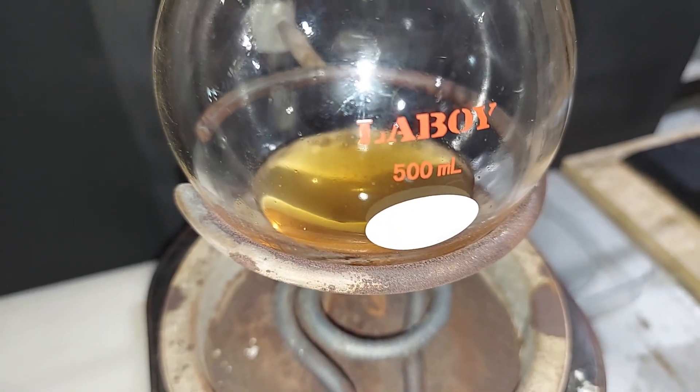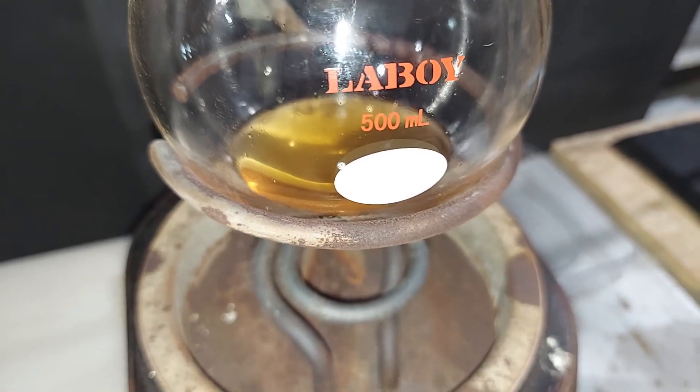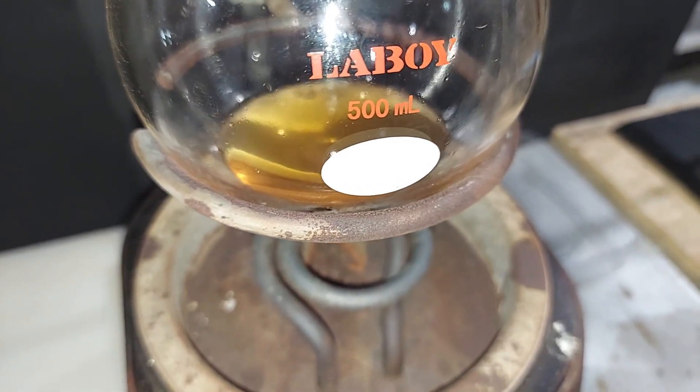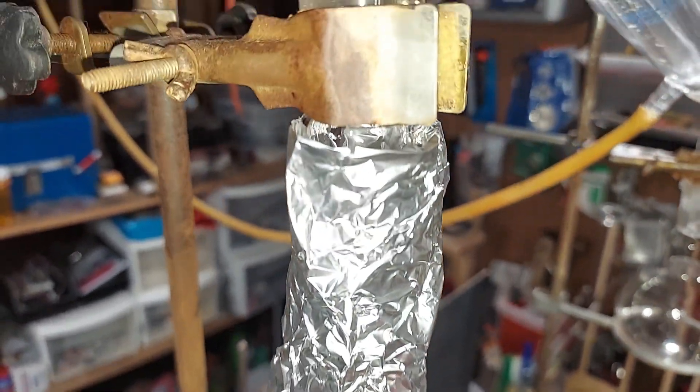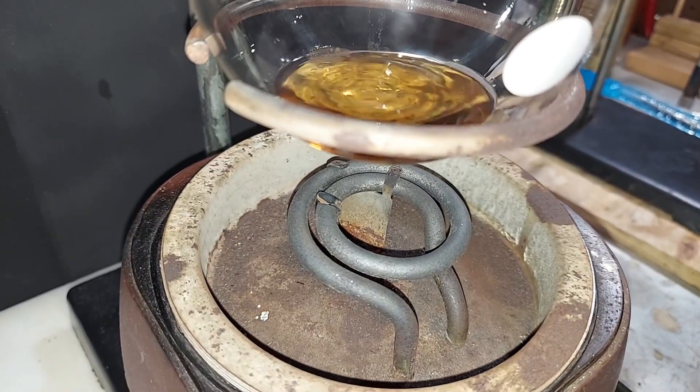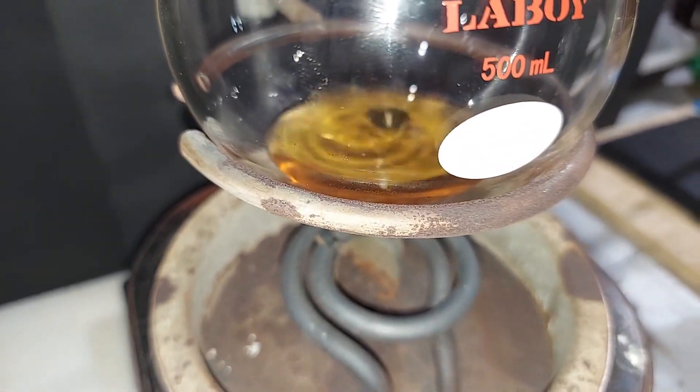Because acetone will come out between about 53 and 58 degrees Celsius, I'm not going to heat this very much at first, because we don't want to bring over other things eventually too. I've added the aluminum foil just to insulate the fractional column a little bit more. The coil is dark, it's not red at all, but we can see acetone really starts to act up at a pretty low temperature.